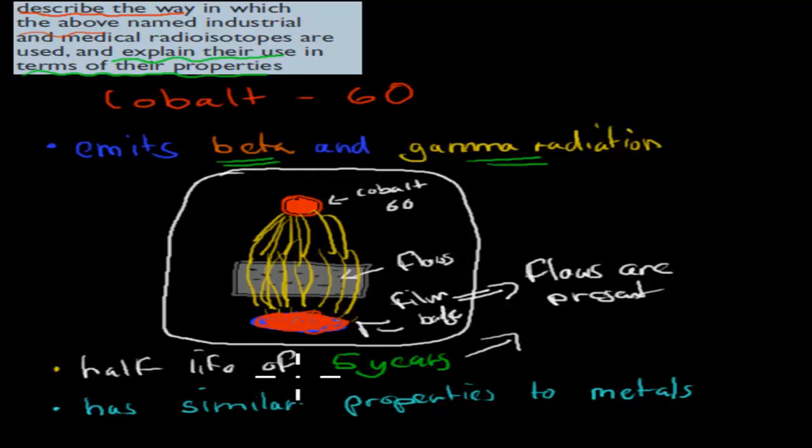Other properties: Cobalt-60 has similar properties to other metals, which means we can have it in metal form—solid form—and move it to different places. The combination of having properties similar to metals and emitting gamma radiation is useful for detecting flaws in instruments or metal casings.